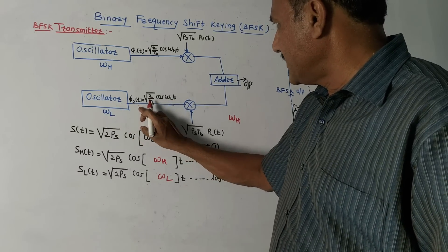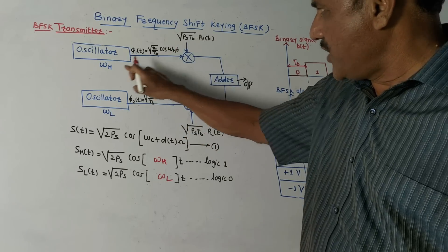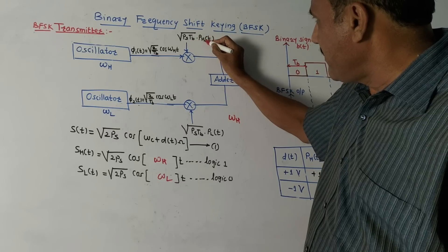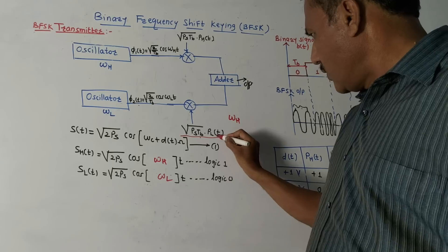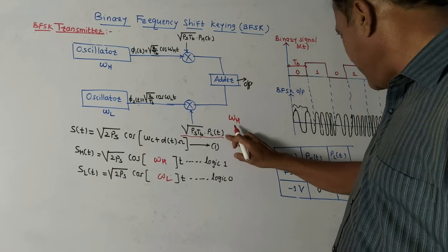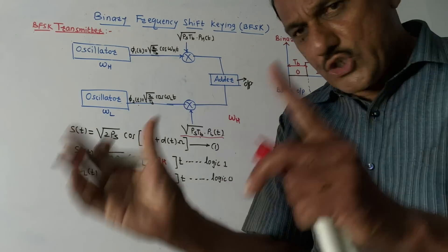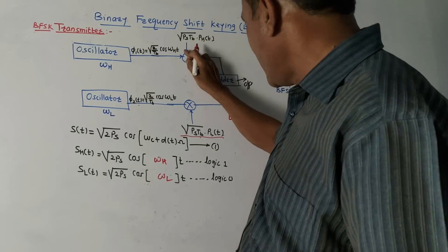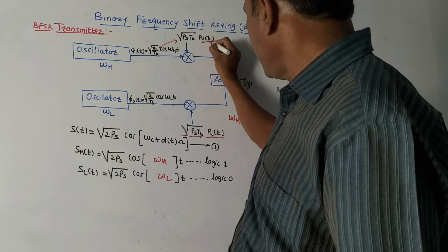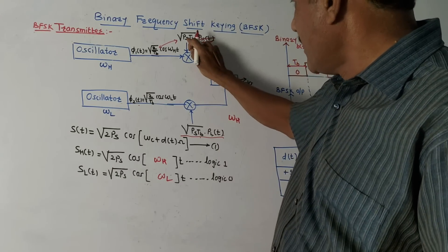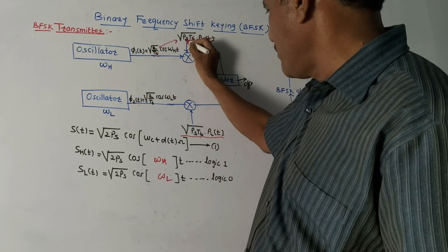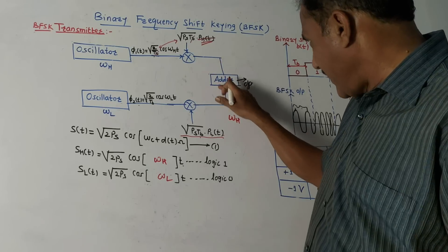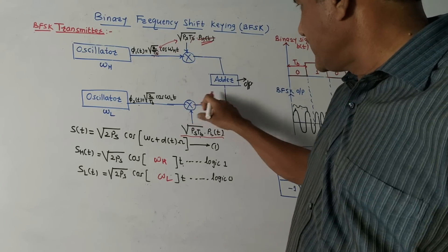Another input to the first multiplier is √(Ps·Tb) · ph(t), and to the second multiplier it is √(Ps·Tb) · pl(t). We discussed that ph(t) and pl(t) can be one or zero — if it is zero, that term vanishes; if it is one, it remains as √(Ps·Tb). The adder will add the higher frequency and lower frequency components, and the output of the adder will be the BFSK signal.